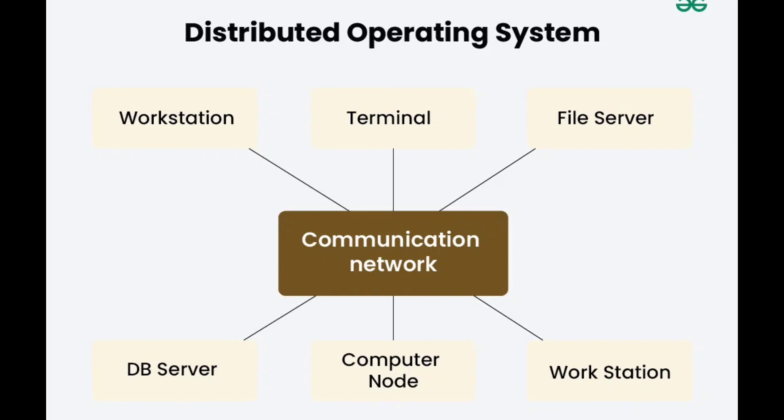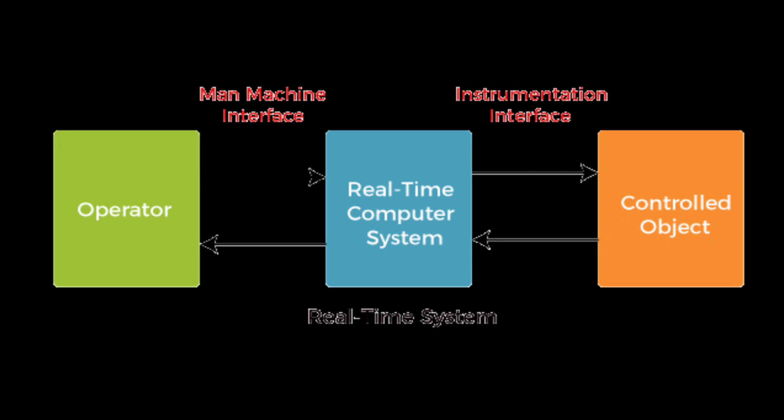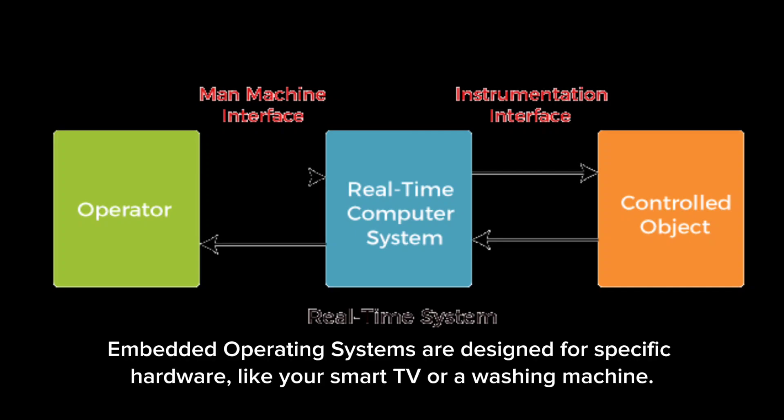Real-time operating systems, or RTOS, prioritize tasks based on deadlines. They're used in critical systems where timing is everything, like air traffic control or medical devices.